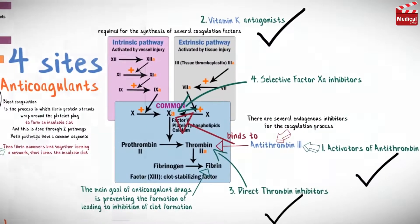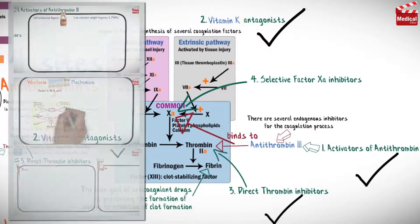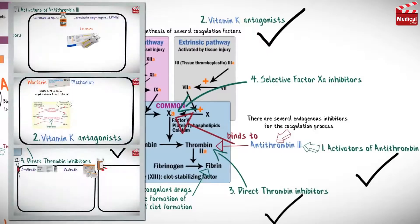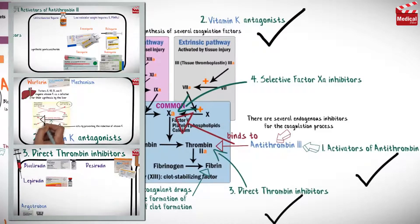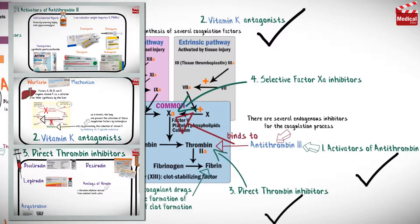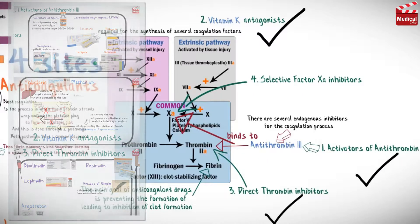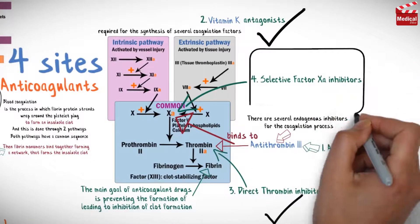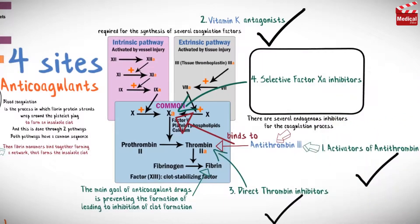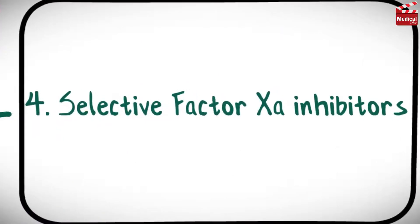In the previous three lectures we discussed three types of anticoagulant drugs: activators of antithrombin 3, vitamin K antagonists, and the direct thrombin inhibitors. Today we'll discuss the last type: the selective factor 10a inhibitors.